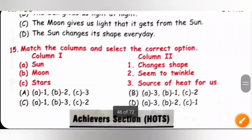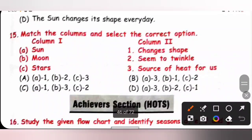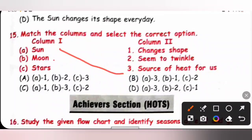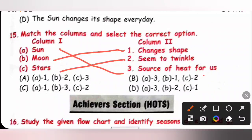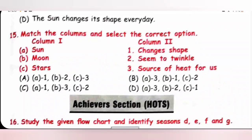Question 15: Match the columns and select the correct option. Sun — source of heat for us: A3. Moon — changes shape: B1. Stars — seem to twinkle: C2. So option B is the correct answer.